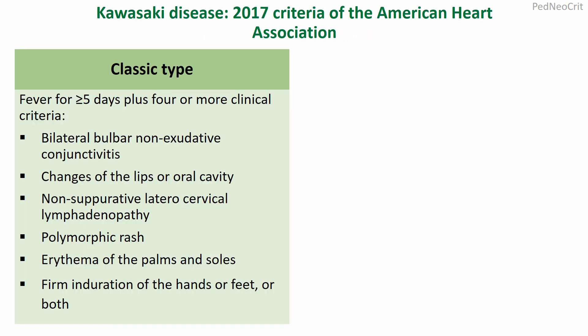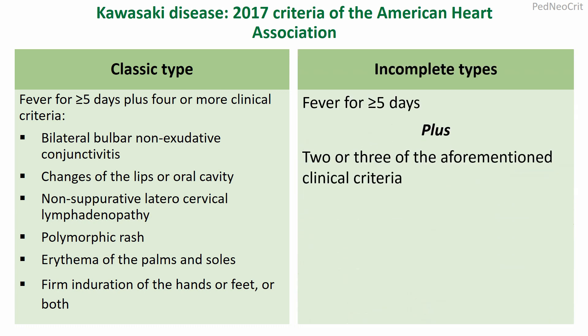This is the 2017 criteria of the American Heart Association for diagnosis of Kawasaki disease. Classic type features include fever for more than five days plus four or more clinical criteria including: bilateral bulbar non-exudative conjunctivitis, changes of the lips or oral cavity, non-suppurative lateral cervical lymphadenopathy, polymorphic rash, exanthema of the palm and sole, firm induration of the hands or feet or both. Incomplete type requires fever more than five days plus two or three of the aforementioned criteria.